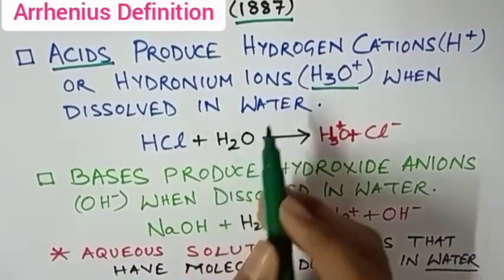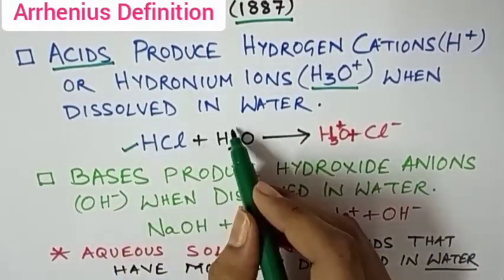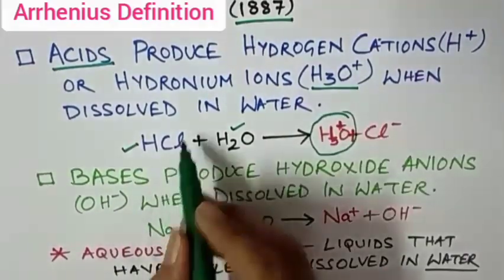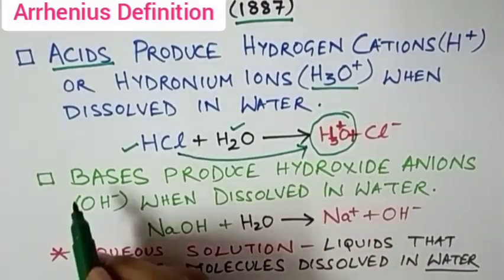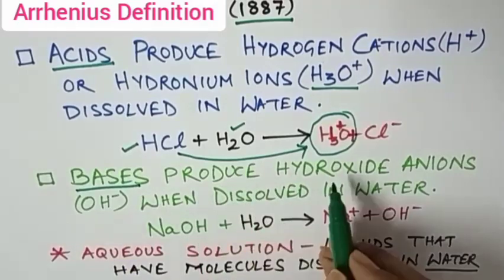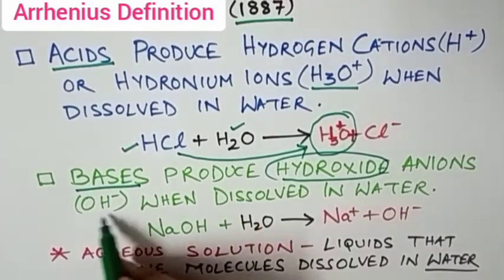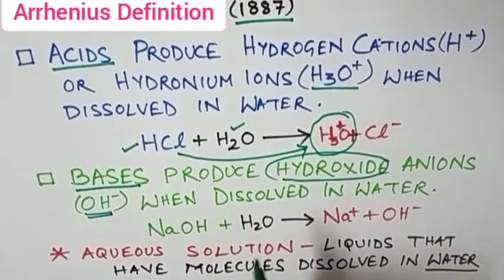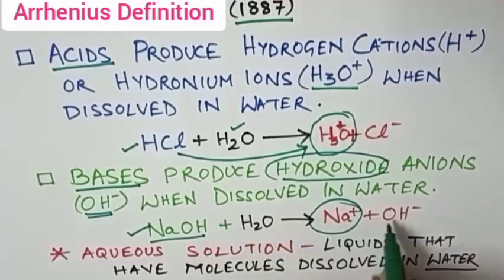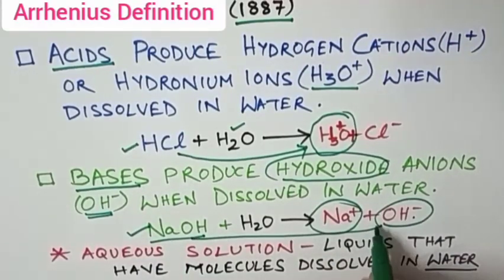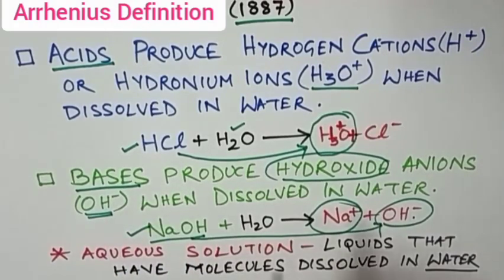Arrhenius concept was given in 1887 in which it stated acids produce hydrogen cations or hydronium ions H3O+ when dissolved in water. For example when HCl is dissolved in water it gives H3O+ and Cl-. Bases produce hydroxide ions when dissolved in water. For example sodium hydroxide when dissolved in water gives Na+ and OH-. Aqueous solution means liquid that have molecules dissolved in water.